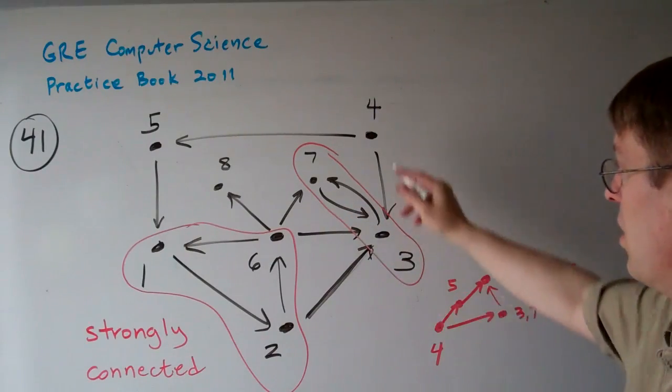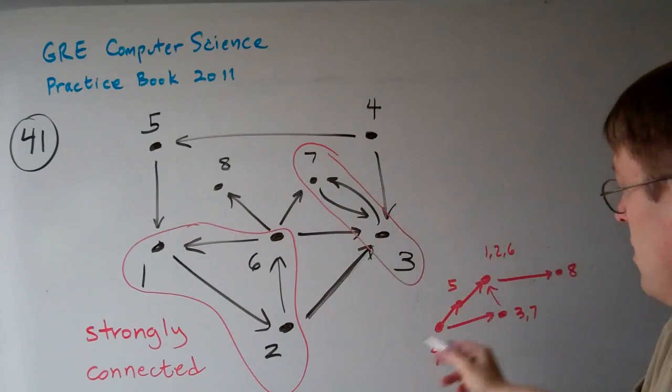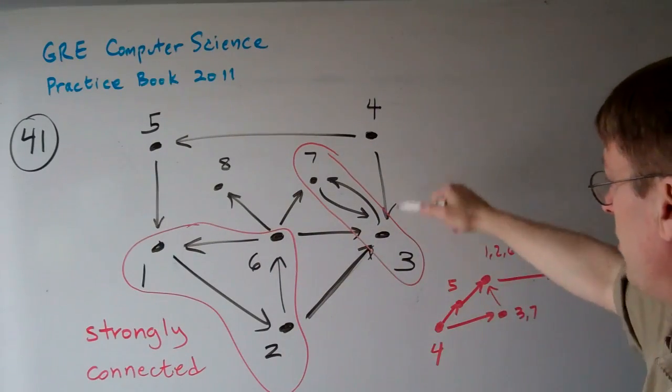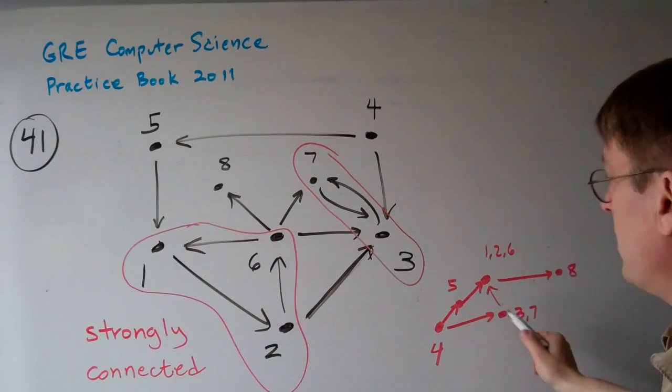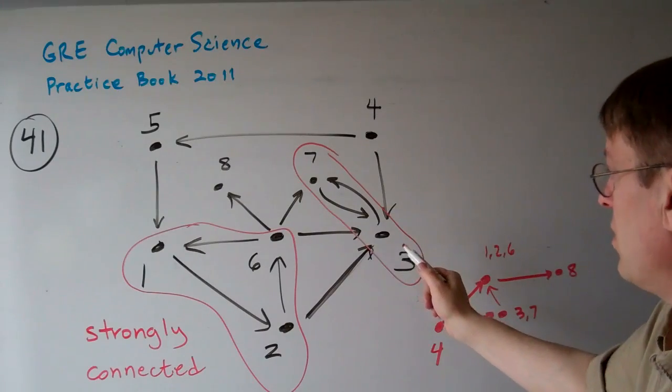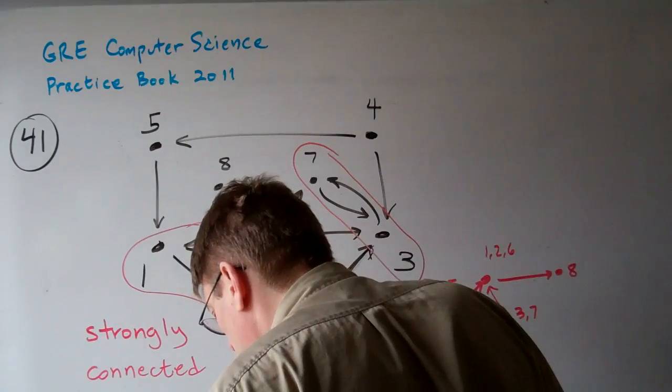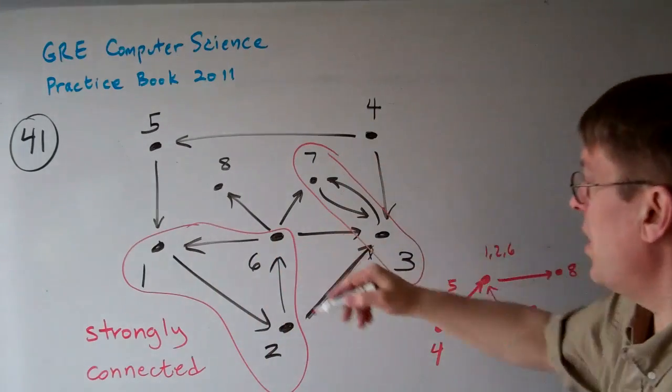And it goes from 4 to 5 to the cluster 1, 2, 6. And it goes also from 3 to the cluster 3, 7 to the cluster 1, 2, 6. Right, because it goes through this way.